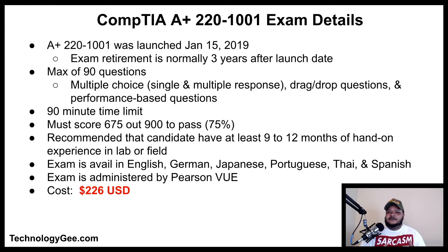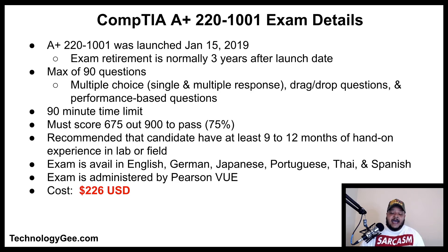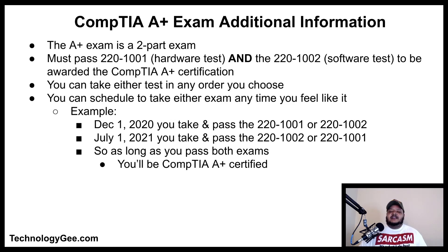The exam is available in English, German, Japanese, Portuguese, Thai, and Spanish. The company responsible for administering the test is the Pearson VUE testing center, and the cost of the CompTIA A+ 220-1001 exam is $226. If you have a school email address ending in .edu, when you go to CompTIA to purchase a voucher, you can possibly get up to 50% off. Otherwise, $226 is the price.